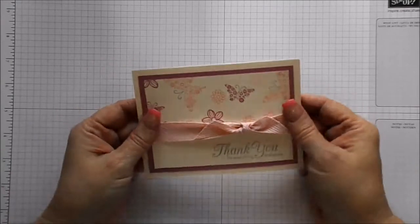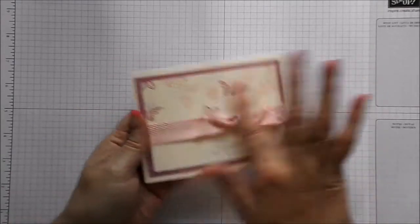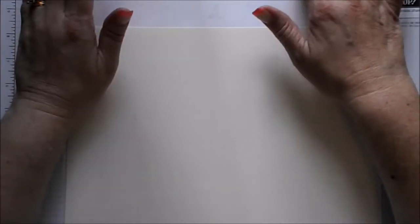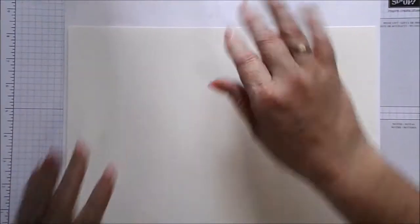Now as I said, I've already pre-done everything, but I will show you how I did it. The colors that I'm using are Pink Pirouette, Smoky Slate, Blushing Bride and Sweet Sugar Plum.